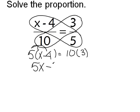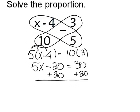And 5 times negative 4 is negative 20. And 10 times 3 is 30. So once again, I want to get x by itself. So I'm going to add 20 to both sides. So I end up with 5x equals 50.